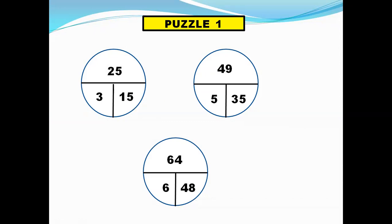So this question mark will be replaced by 48. I will show you how. 25 is a perfect square. The square root of 25 is 5. When you multiply this 3 with 5, we get 15.